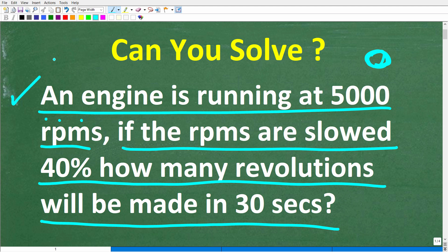Then of course, I'm going to solve this problem step by step. All right, so let's take another look at the question before I show you the answer. An engine is running at 5,000 RPMs. If the RPMs are slowed 40%, how many revolutions will the engine make in 30 seconds?